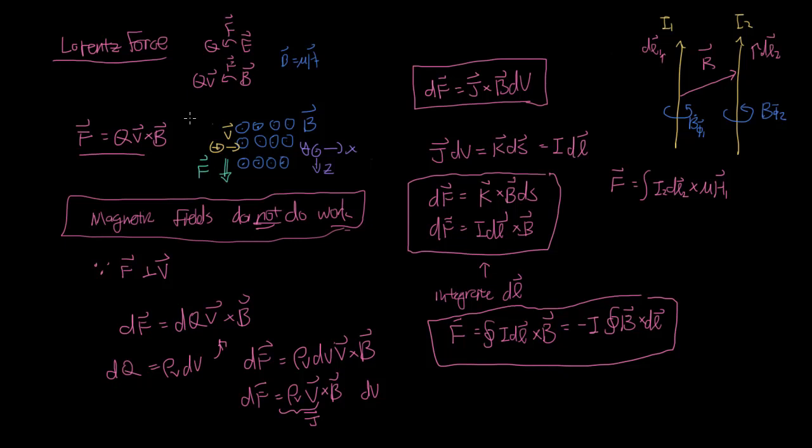So the B1, which is mu H1. And we're going to integrate this across wire 2. So each of these current segments will experience a force due to this magnetic field here, and we're going to add them all up to find the total force that the wire experiences.